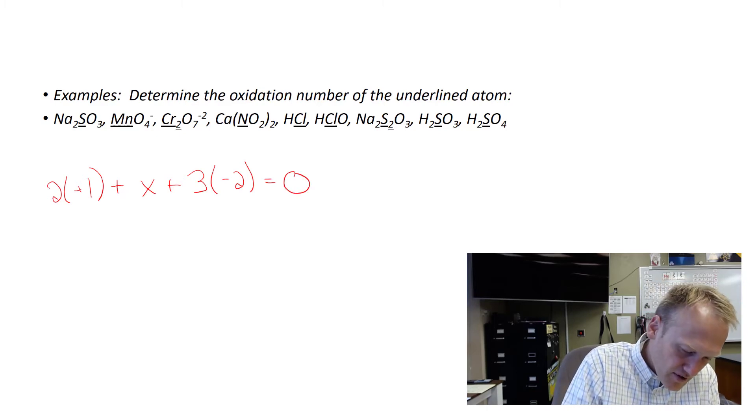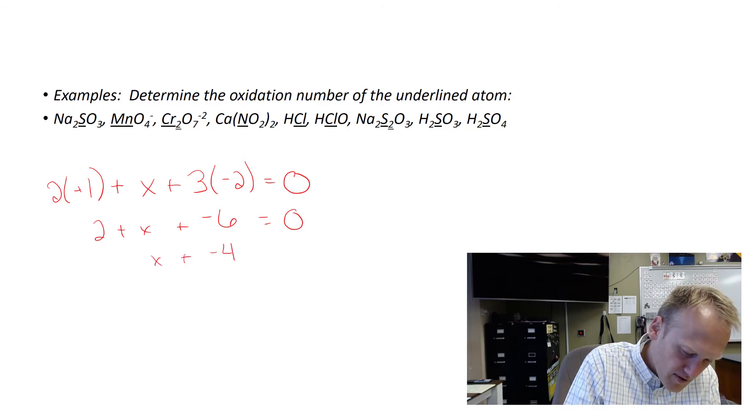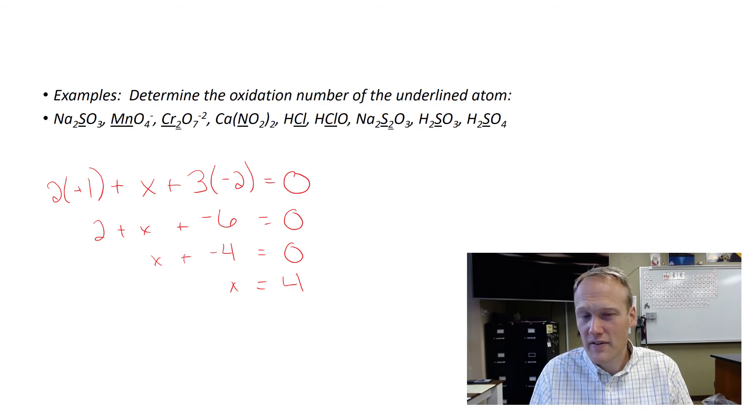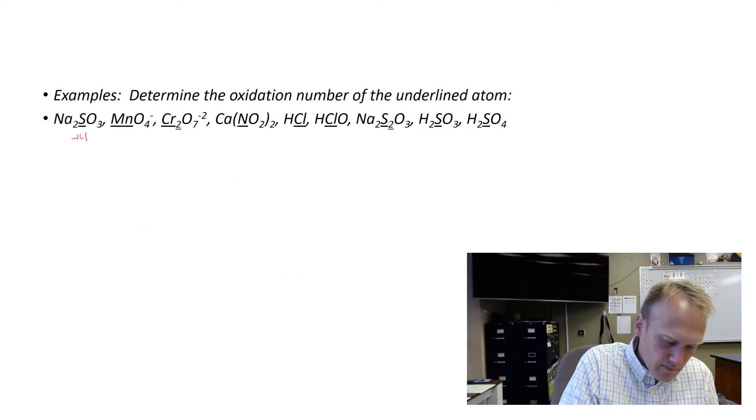So now we just solve for x. So we got two plus x plus negative 6 equals zero. And then x plus negative 4 equals zero. So x is going to equal 4. Therefore, the oxidation number of sulfur is a plus 4 charge. Let's try this next one.